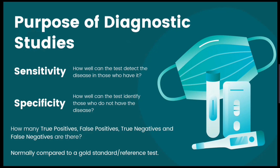The aim is to discover the sensitivity and specificity of a diagnostic test — in other words, how well it can both detect the disease and identify those who do not have the disease of interest. Usually they are compared to a gold standard or reference test, and we are looking to find out how many true positives, false positives, true negatives and false negatives there are.